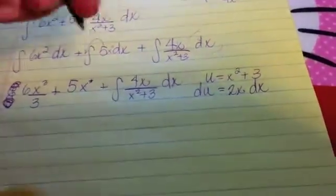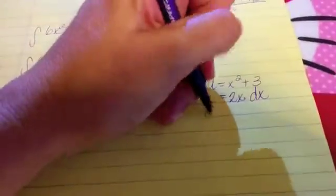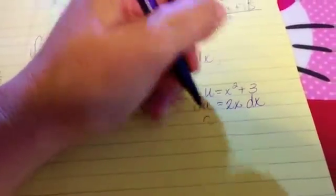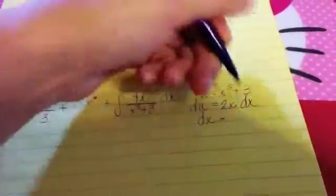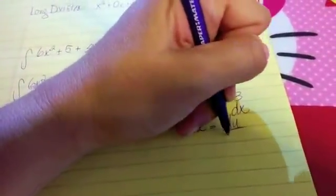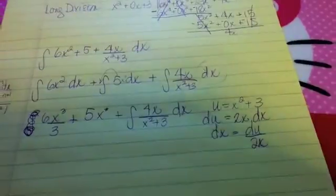So that's good. And then if I solve for dx, because I want to know what dx would be substituted for in the integral, I'd get that by dividing both sides by 2x. I'd get that dx was equal to du over 2x. So that works out fine.